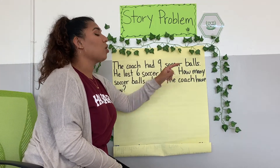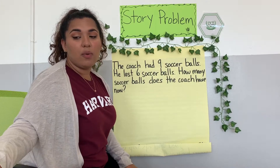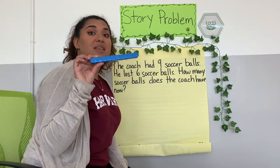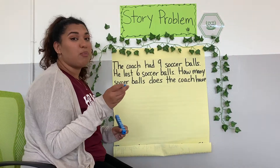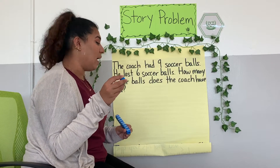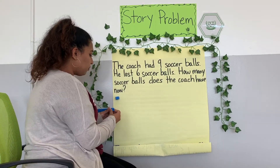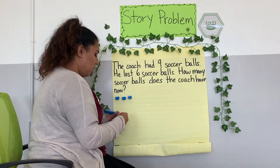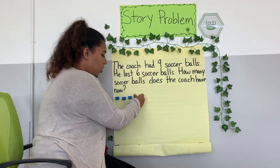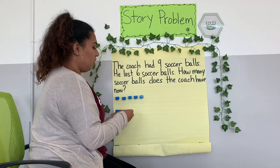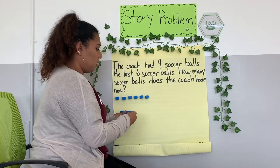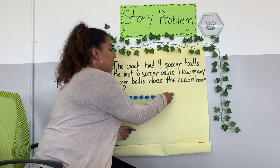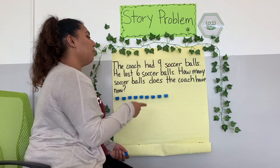The coach had nine soccer balls. If I were to show that with my cubes, how many cubes should I use to show nine soccer balls? Nine. Great. Count with me as I put these cubes in a straight line. Let's go. One, two, three, four, five, six, seven, eight, nine. So that shows those nine soccer balls.